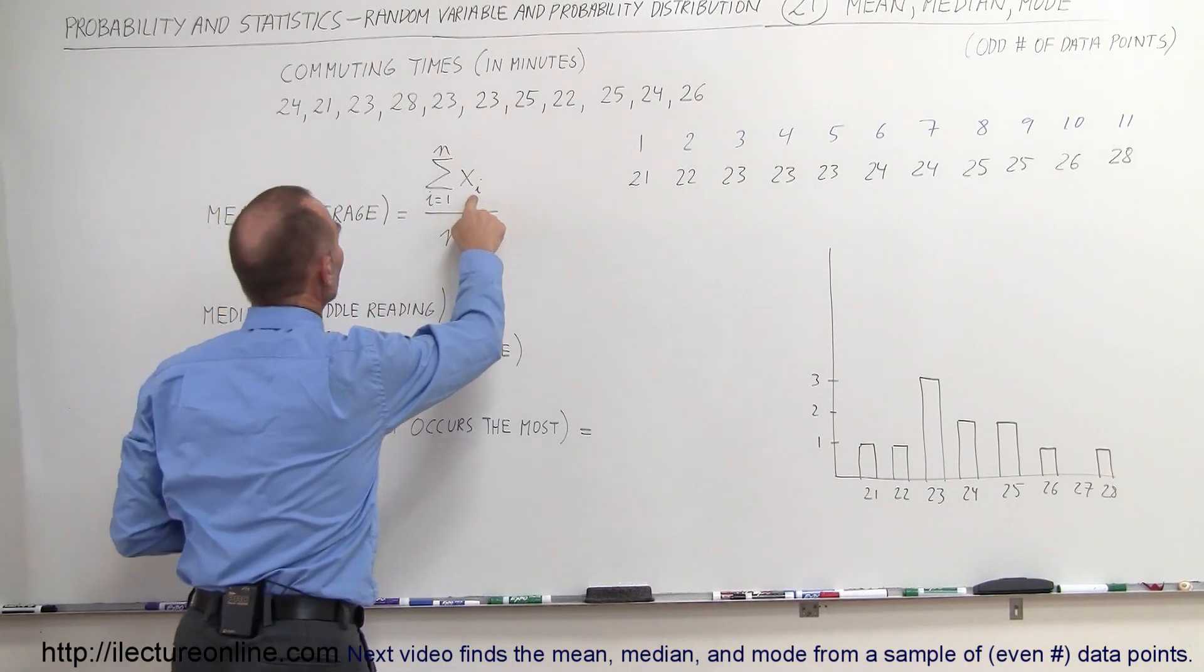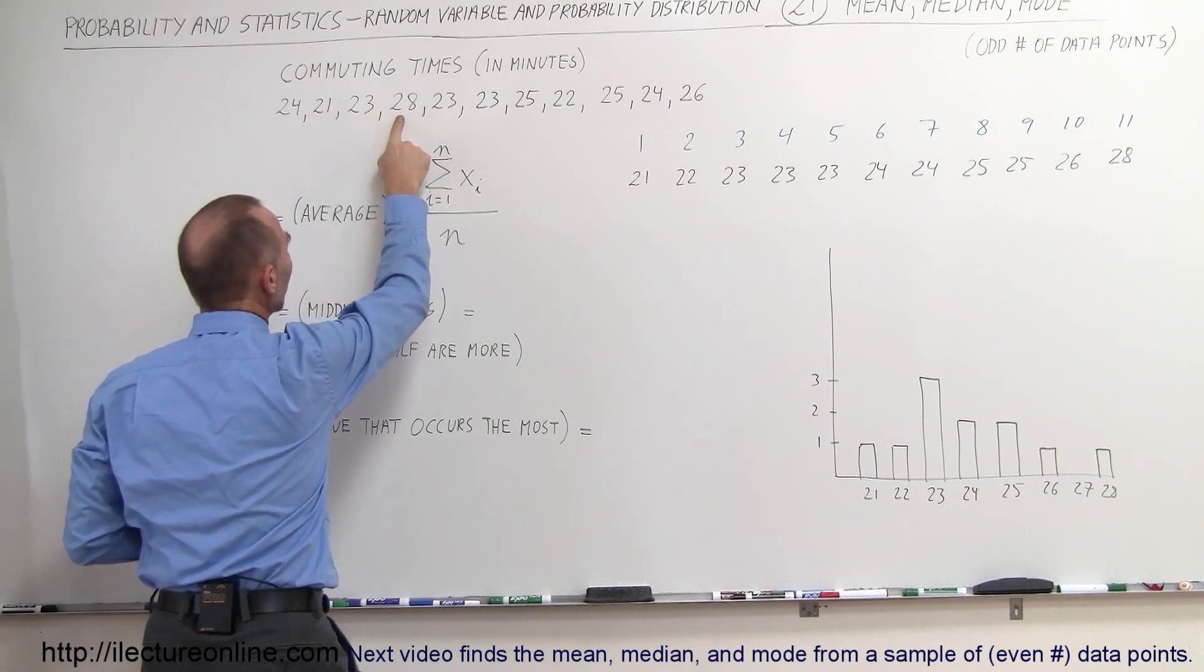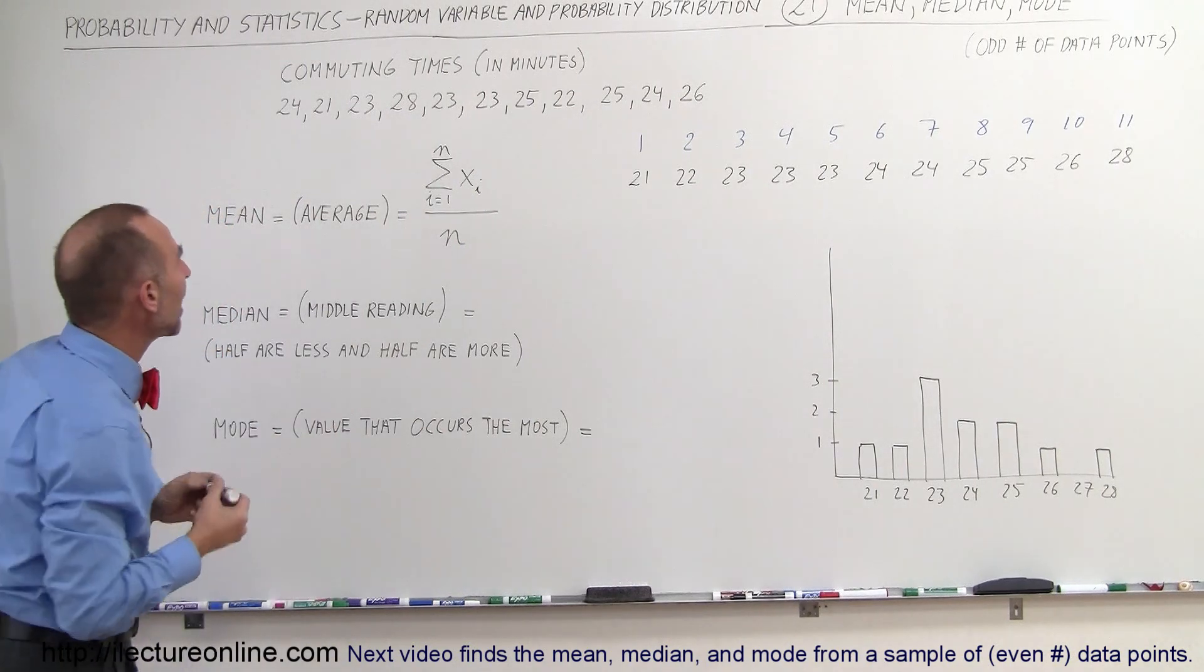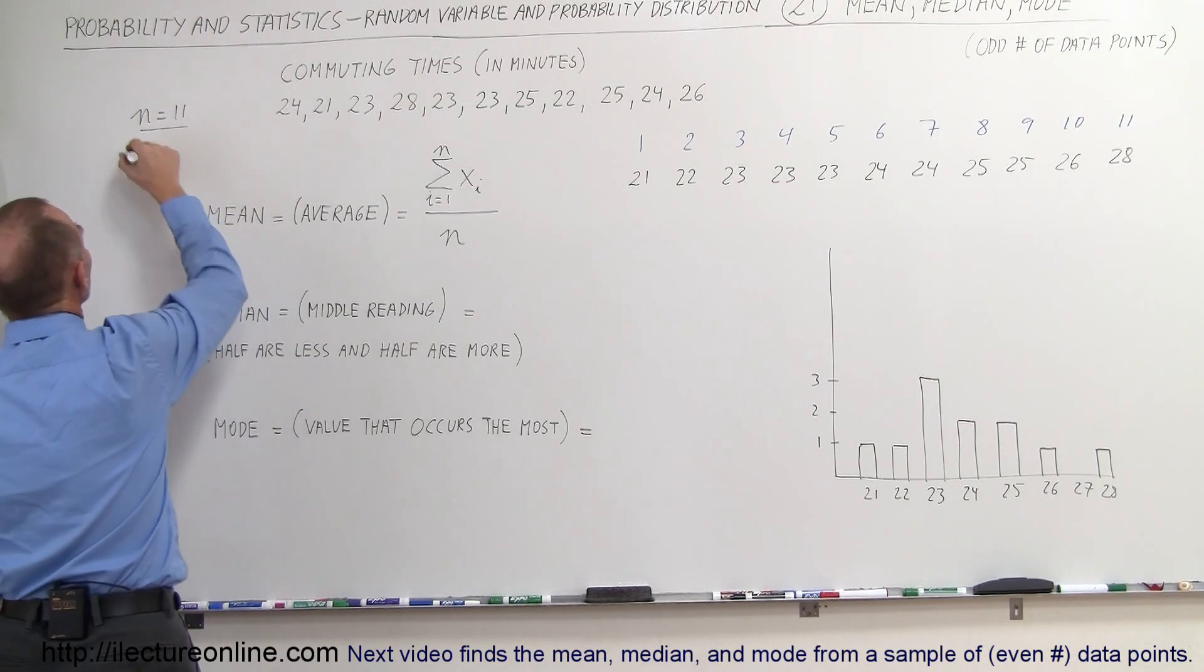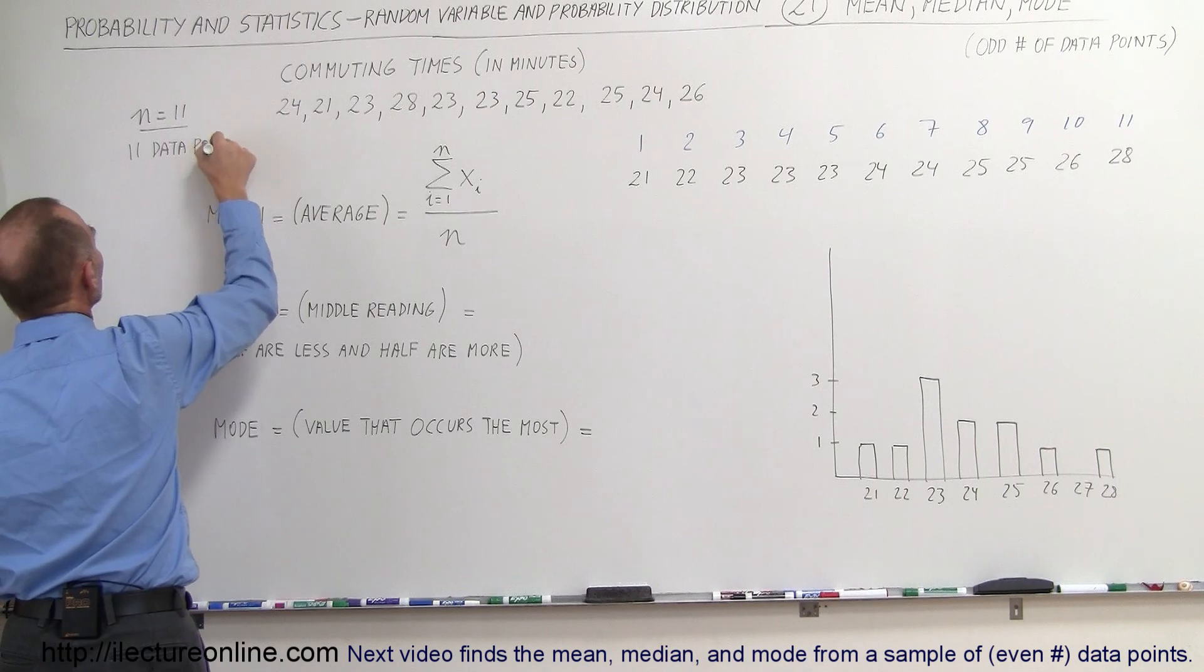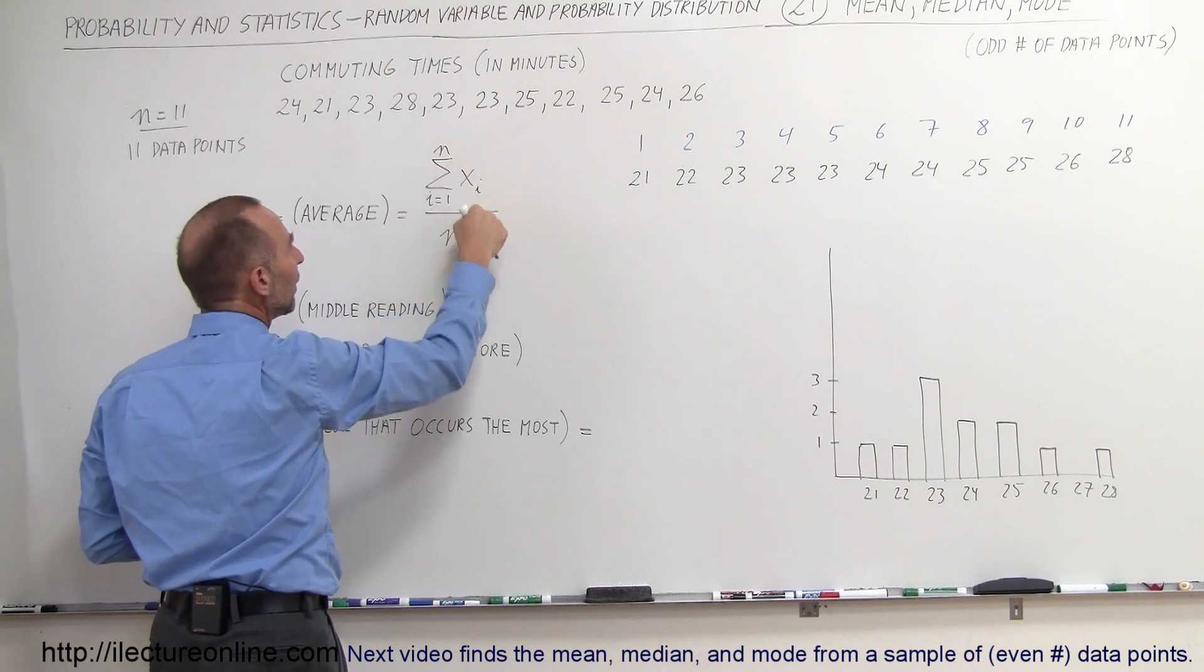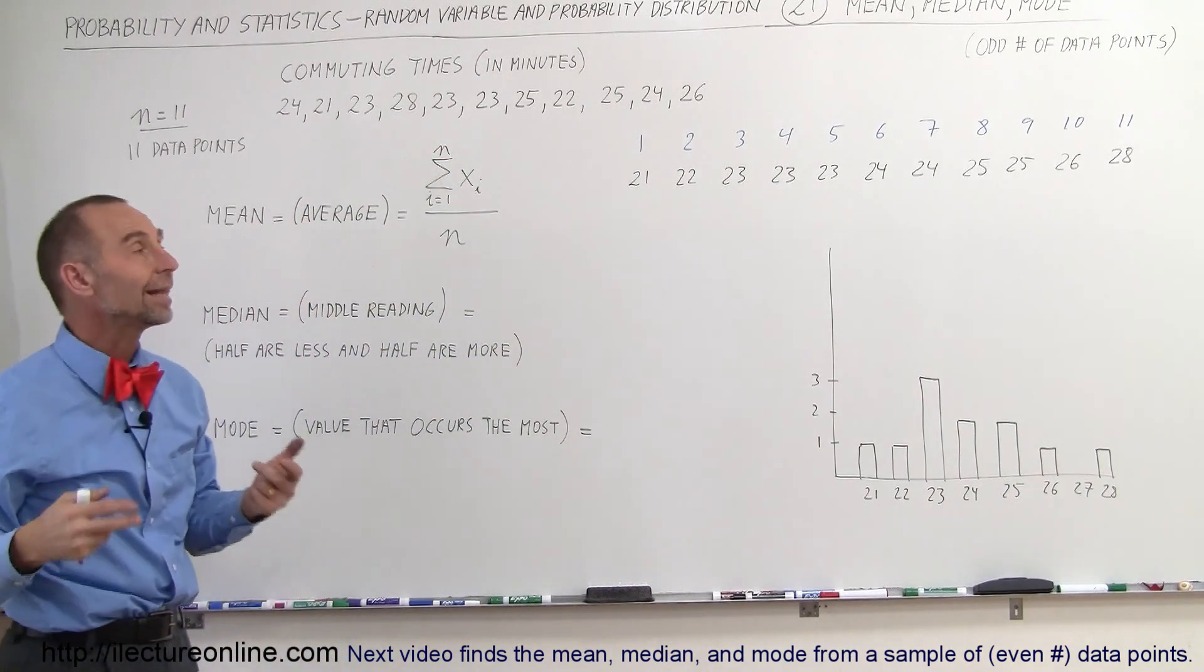i is a subscript, so this would be x sub 1, x sub 2, x sub 3, x sub 4, all the way to x sub 11. n represents the total number, the total quantity of data points that you have. So in this case, n is equal to 11 because you have 11 data points. So that represents the number of data points. And so this means that you're going to add them all up from the first one to the last one, add them all up, and then you divide that number by the total number of data points you've got, which is 11.